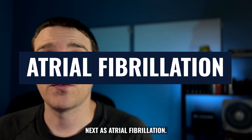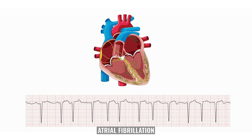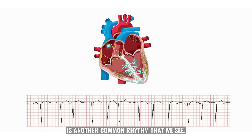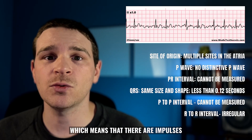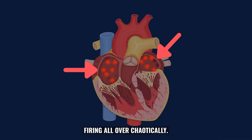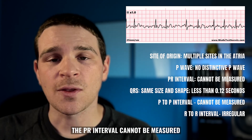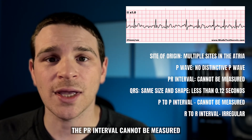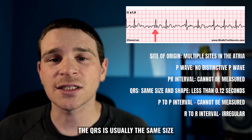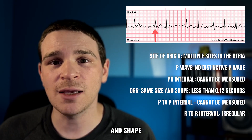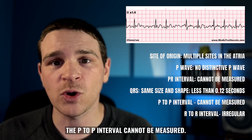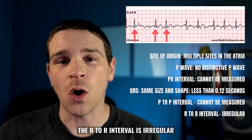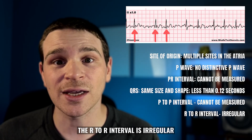Next is atrial fibrillation, another common rhythm that we see. The site of origin is multiple ectopic sites in the atria, which means that there are impulses firing all over chaotically. There are no discernible P waves, the PR interval cannot be measured, and the QRS is usually the same size and shape and usually less than 0.12 seconds. The R to R interval is irregular.